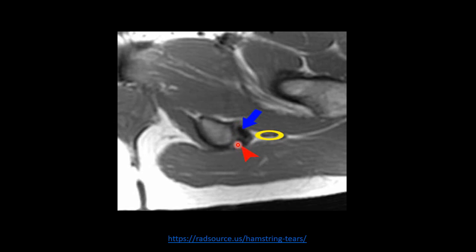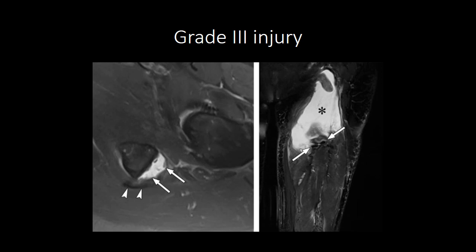The ischial tuberosity gives origin to the hamstring group of muscles. Posteriorly, this is the common origin of biceps femoris and semitendinosus. Anteriorly, this is the origin of semimembranosis. Lateral to these is the sciatic nerve, labeled with a yellow circle. Injury to the sciatic nerve is common in avulsion injuries at the ischial tuberosity. In this case, the common origin of the hamstring group of muscles is not visualized at the ischial tuberosity and there is mild fluid. The coronal images show torn and retracted proximal myotendinous junctions with a large hematoma filling the gap between the torn ends. This is a grade 3 avulsion injury.